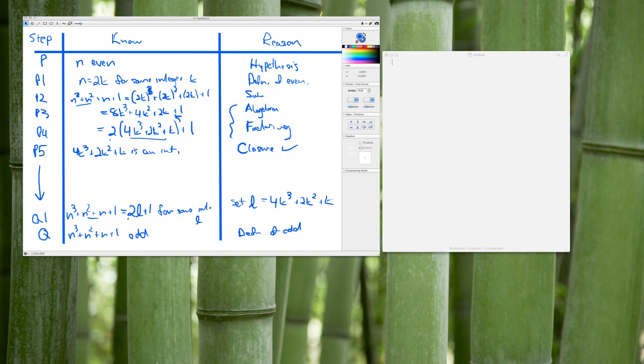We're going to be converting from a know-show table to a paragraph form style proof. Now, why is this important? Why can't we just stop at a decent know-show table? Here's the know-show table from the previous video, where we were proving that if n is even, then n cubed plus n squared plus n plus 1 is odd. Why can't we just stop at this?